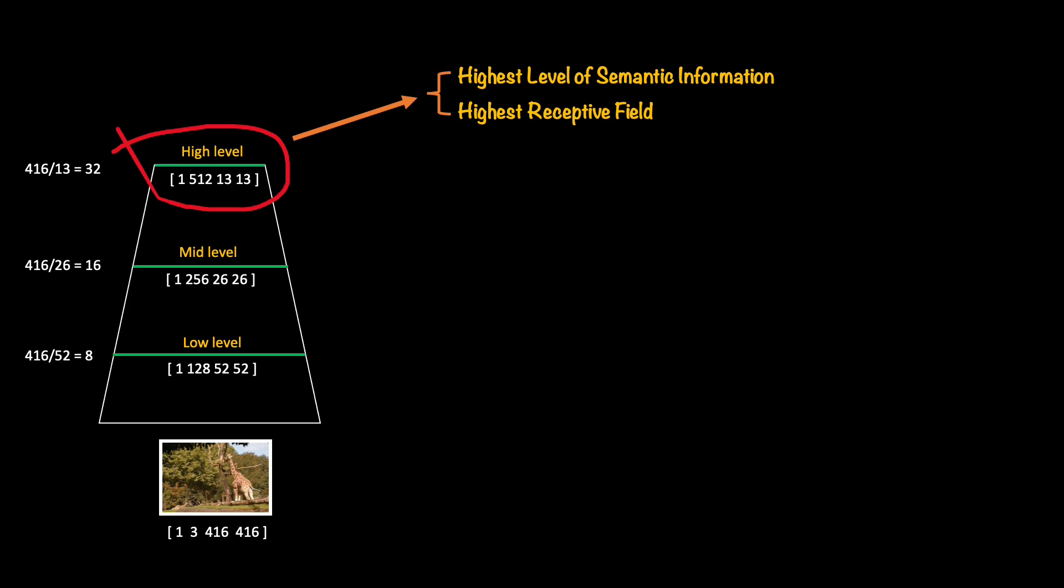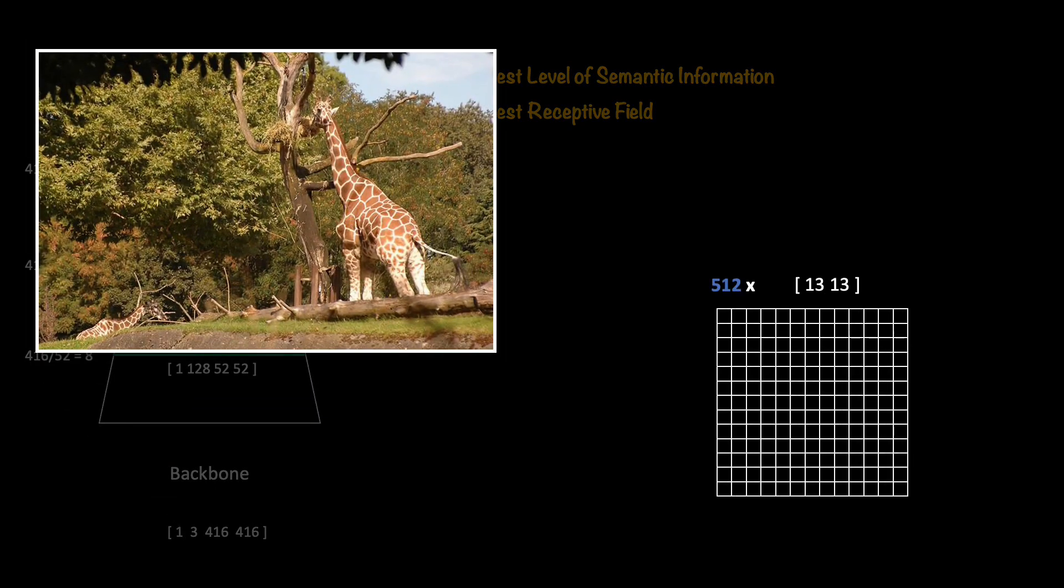By the way, these features, the high level features and by extension, the information they carry are also the least interpretable, meaning that we do not know really what these represent. These are very abstract information. The highest receptive field means that every cell in the feature map is capturing the information about a bigger portion in the original input image.